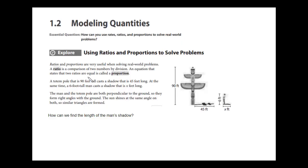In lesson 1.2, which is about modeling quantities, we are going to use something called a ratio. A ratio or a proportion is a situation where we have one fraction which compares two numbers, and that's equal to another fraction. When you have two fractions that are equal, we call those two things a proportion.